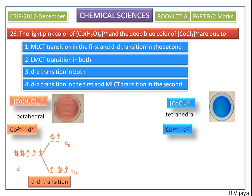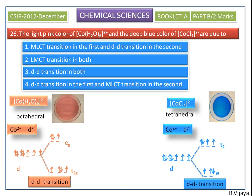Next, for the tetrahedral geometry, the d orbitals are split into e and t2 orbitals. The electrons are filled in the e and t2 orbitals. During transition, the electron is excited from the e orbital into the t2 orbital without changing the spin — giving a d-d transition. So both complexes exhibit d-d transition.